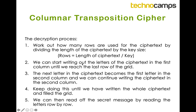Once we know our rows and columns we can draw the grid and start writing out the letters of the cipher text into it. We start with the first column, writing the first letter in the first row, then filling down that column. Once we reach the end of that column we put the next letter of the cipher text into the first row of the second column, continuing to fill it, then doing the same for the third, fourth and so on until the grid is full. We then read off the secret message row by row.